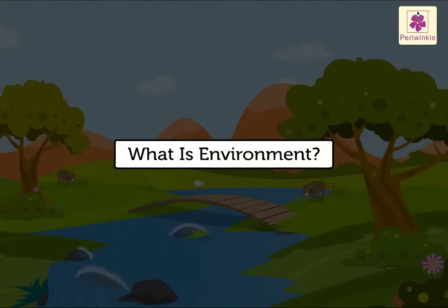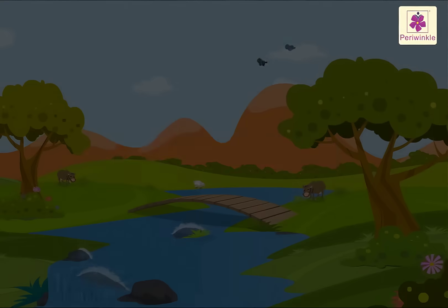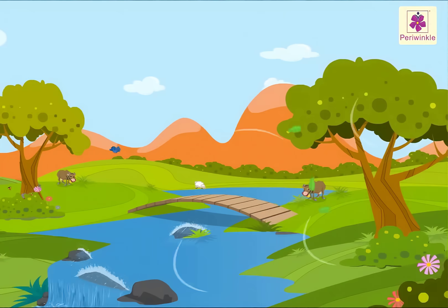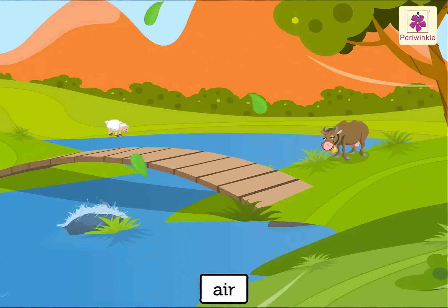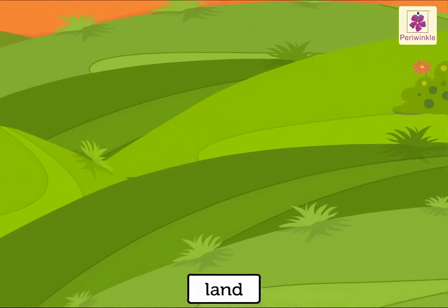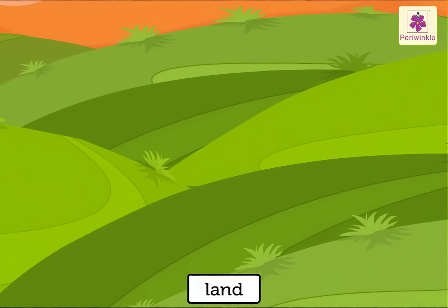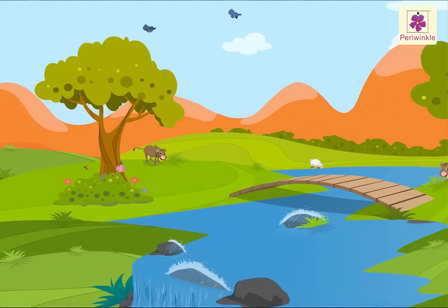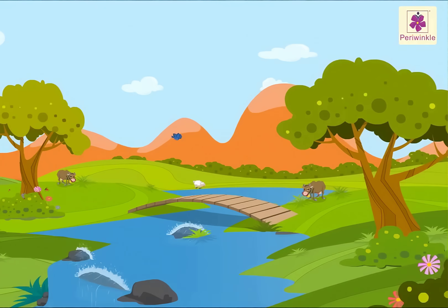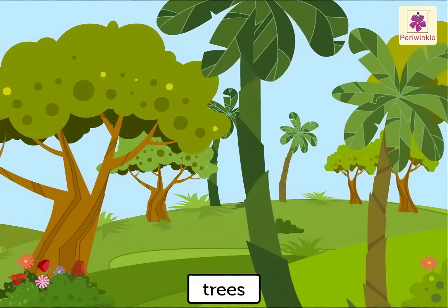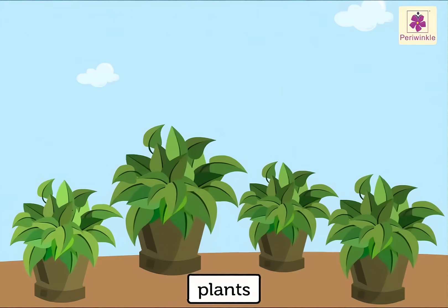What is environment? Environment consists of air, water, and land. It consists of everything we see around, like trees, plants, flowers, animals, birds, and also people.